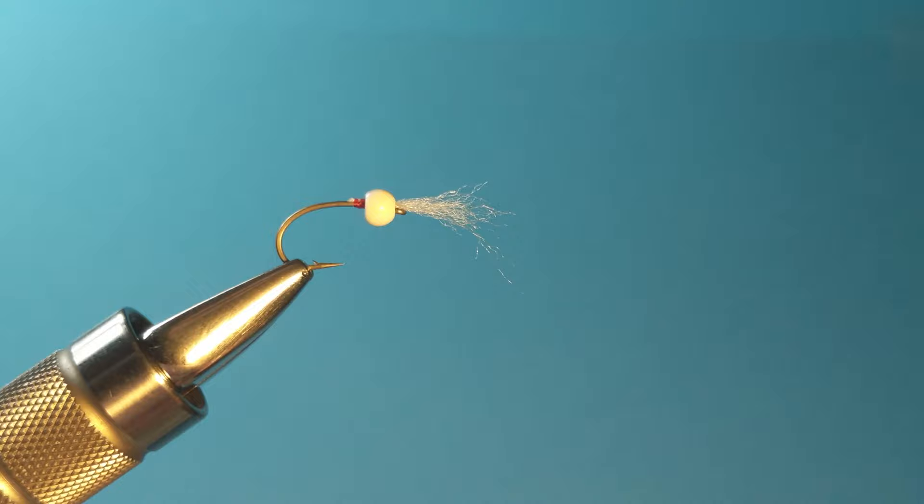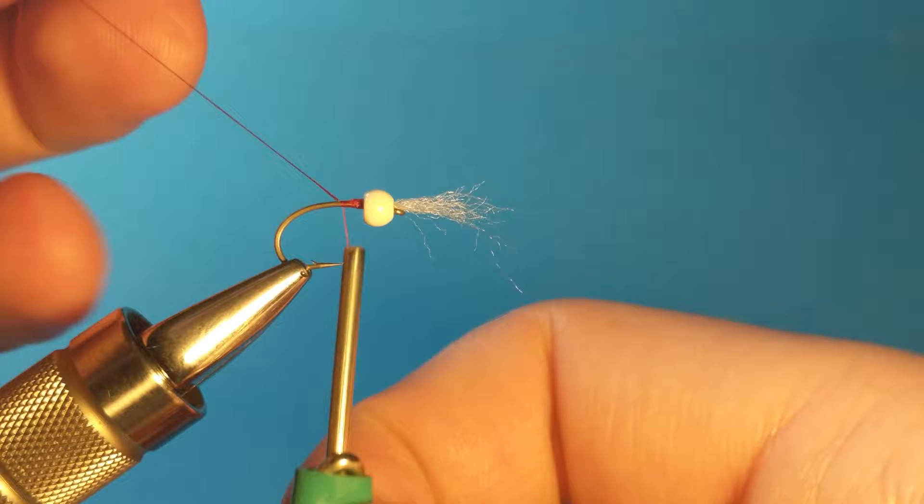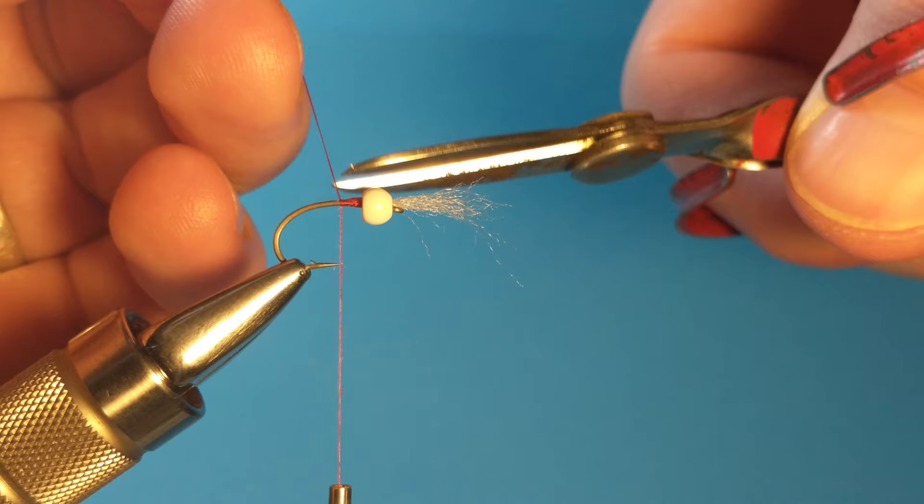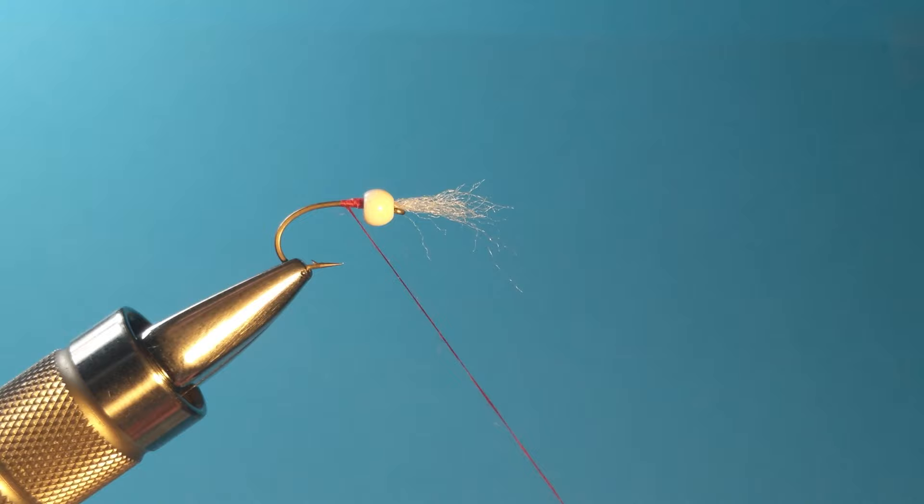Do another thread wrap. Get that little end covered. Snip off the excess. So now that we've tied in, this thread is actually going to act as the color for our chironomid. So we're going to wrap it all the way down the bend in just a single layer.